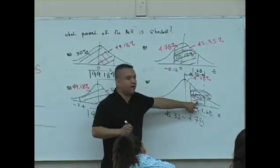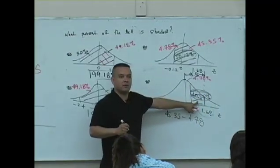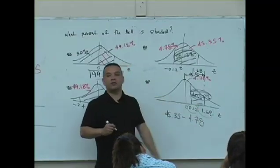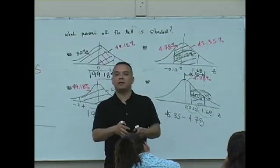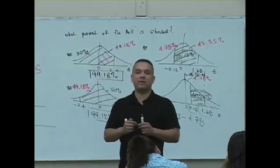40, this is 40.57%. That's what's new for you, is you're determining that percent of the bowl that's shaded using the z-table.